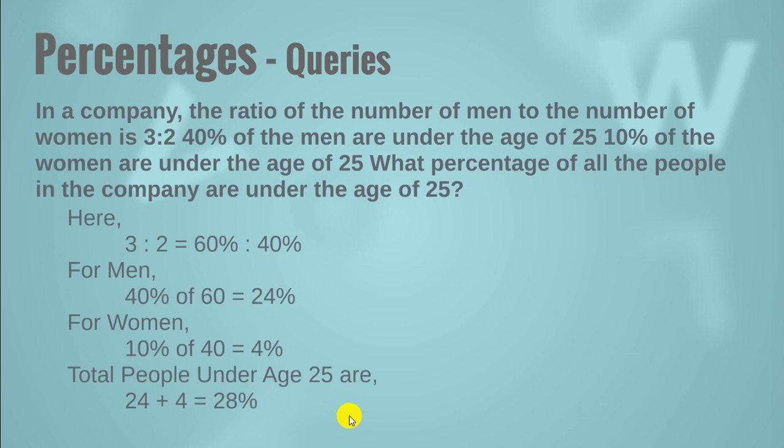Here we have another question. In a company, the ratio of the number of men to the number of women is 3:2. 40% of the men are under the age of 25. 10% of the women are under the age of 25. What percentage of all the people in the company are under the age of 25? Here we have 3:2. So to check 3:2 in terms of percentage, we simply add these two terms, that is 3 plus 2 equals 5. We divide them with 5 and multiply them with 100. So we get 60% and we get 40%, which means that 3 divided by 5 multiplied by 100 will give us 60, and 2 divided by 5 multiplied by 100 will give us 40. So now we have these ratios in terms of percentages.